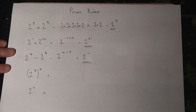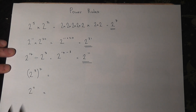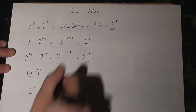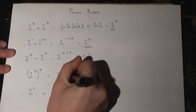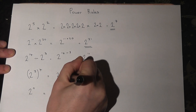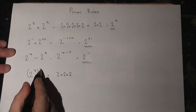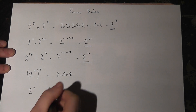Now brackets can look quite confusing, but actually this is quite an easy question. 2 cubed is just 2 times 2 times 2, and the power of 4 just means that this occurs 4 times.